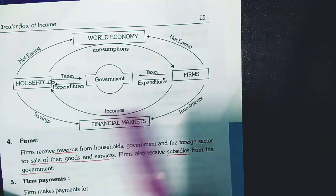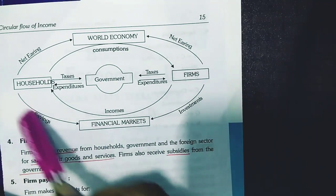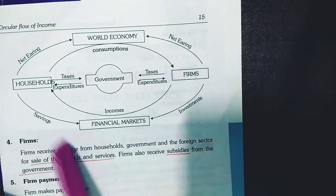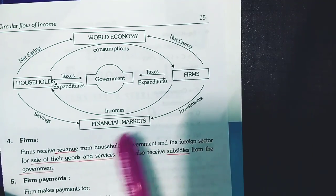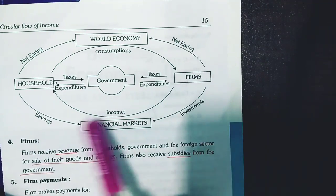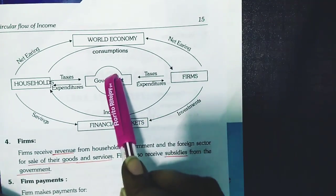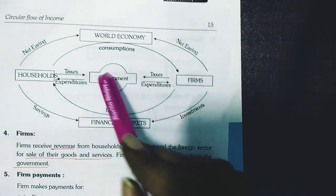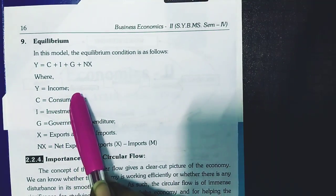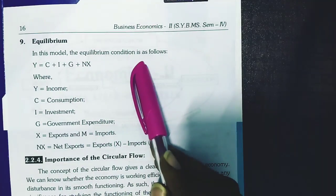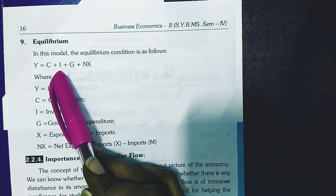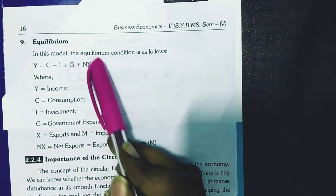All savings from households, firms, and the government sector go to the financial market, which then transfers the amount back as lending to firms, households, and even the government. The equilibrium condition in the four-sector economy is: Income equals Consumption plus Investment plus Government Expenditure plus Net Exports.